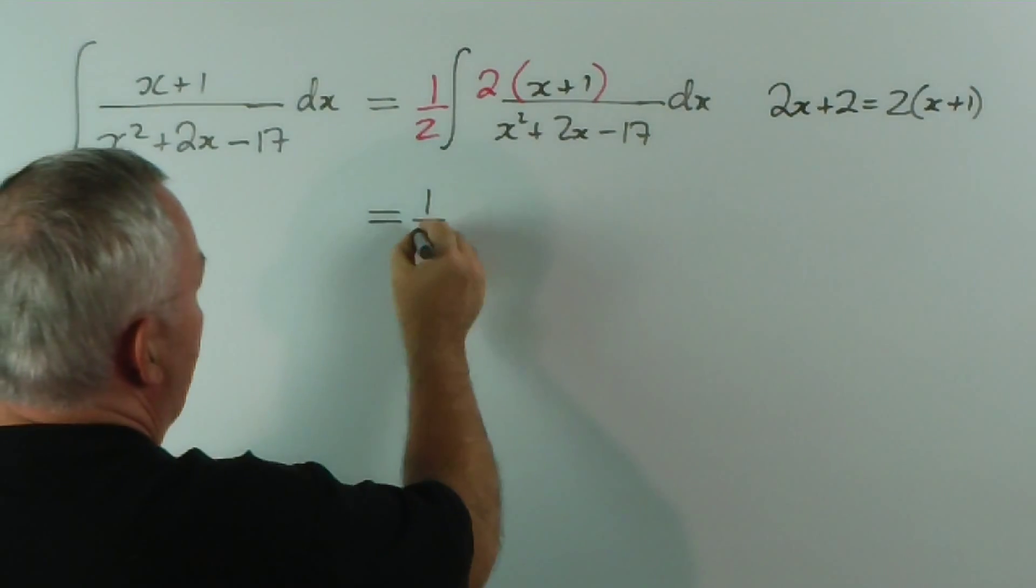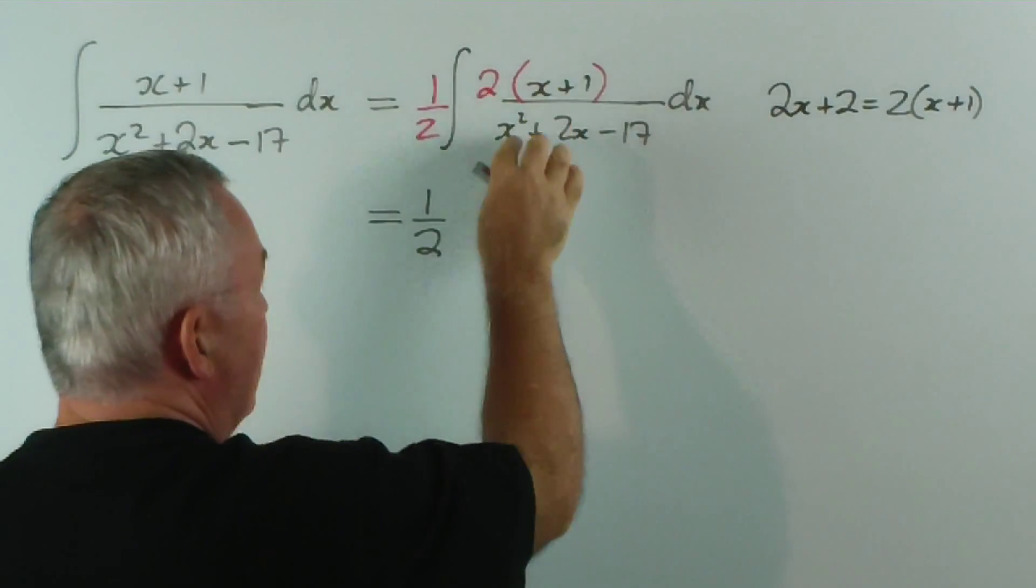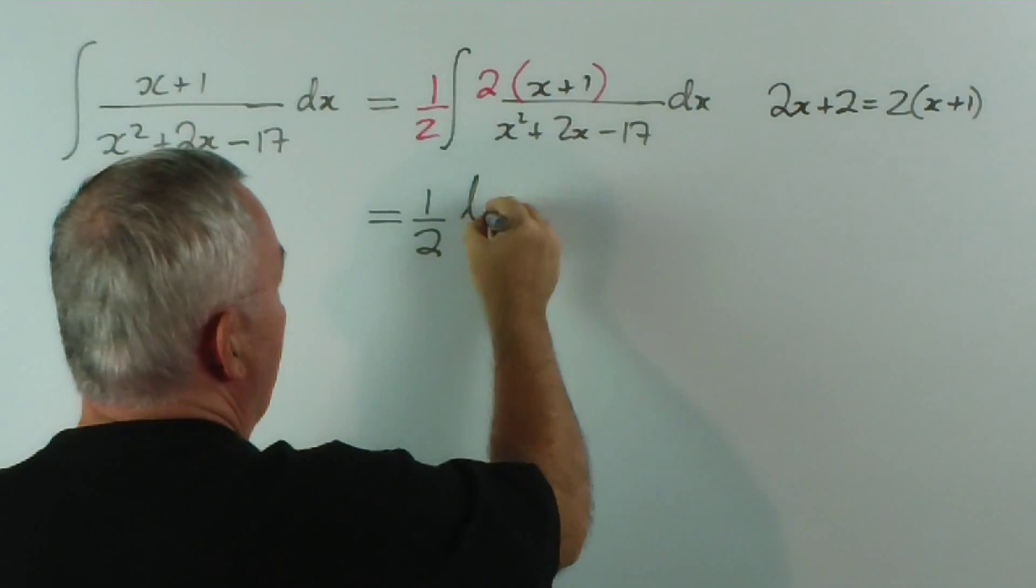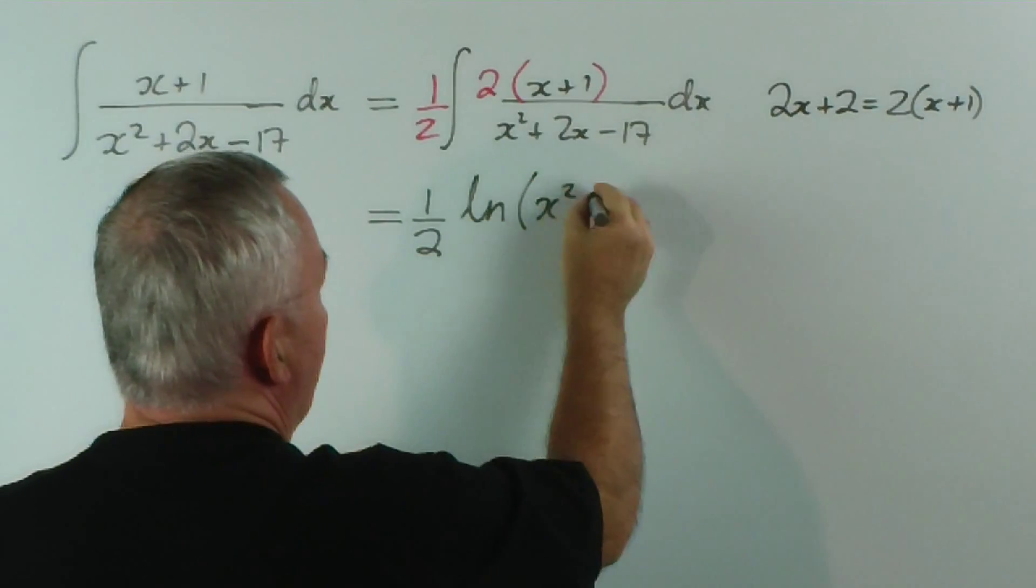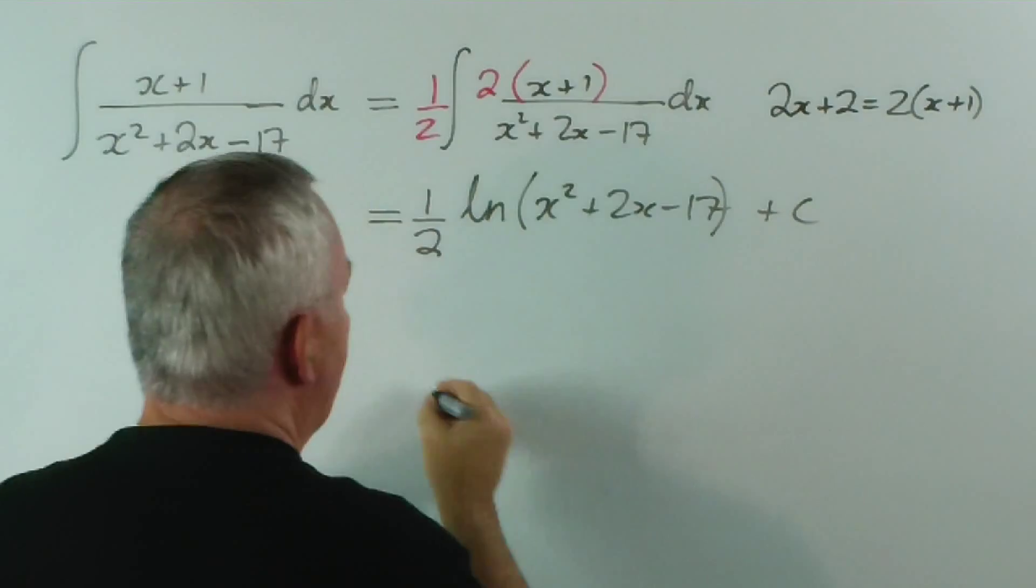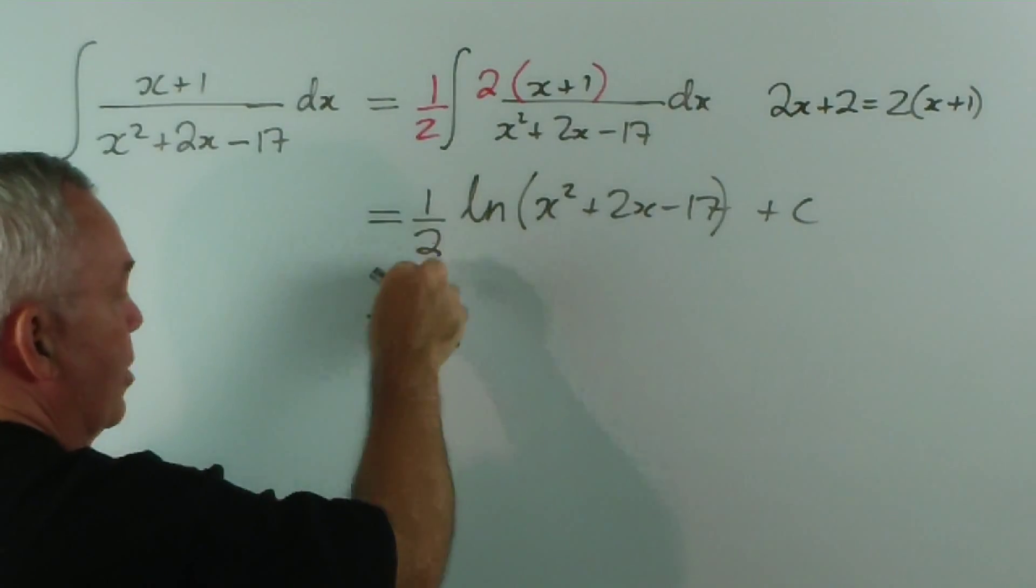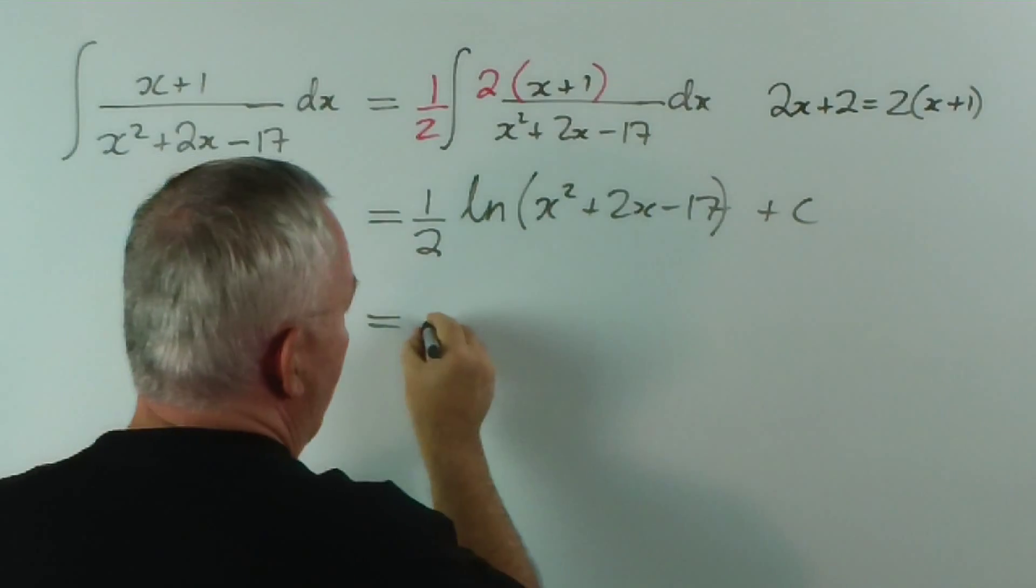And therefore, our result will be 1 half. And this entire integral now, because the top now is exactly the derivative of the bottom, will be the logarithm of (x squared plus 2x minus 17) plus c. And I like writing this not with the fraction at the front, but with the 2 underneath.